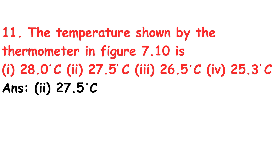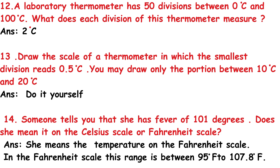Question 11: The temperature shown by the thermometer in figure 7.10 is — options: 28.0°C, 27.5°C, 26.5°C, or 25.3°C. The correct answer is option 2: 27.5°C. Question 12: A laboratory thermometer has 50 divisions between 0°C and 100°C. What does each division measure? Answer: 2°C.